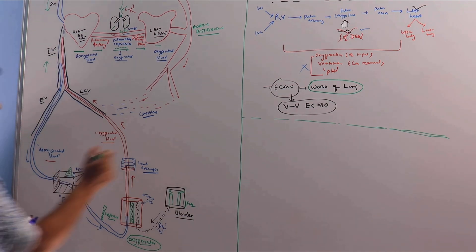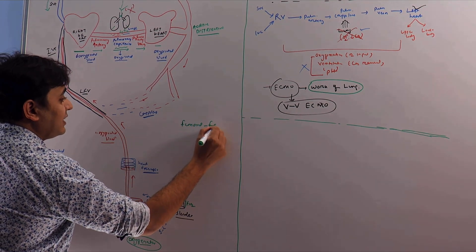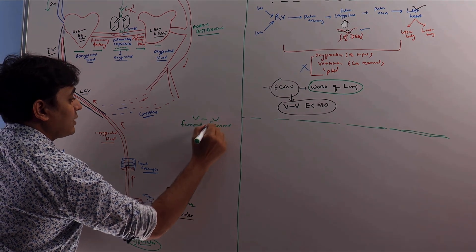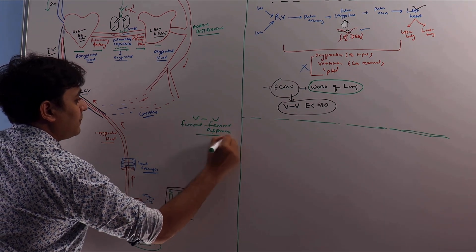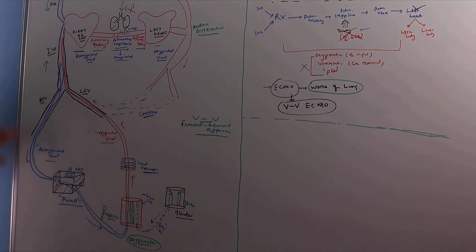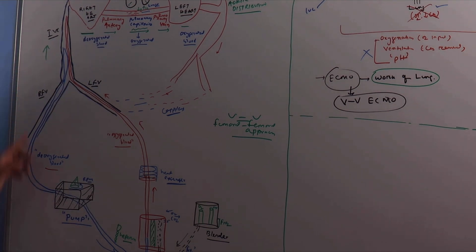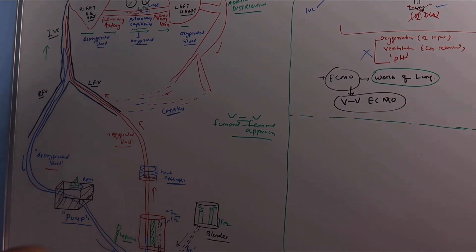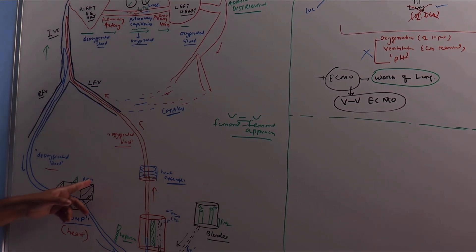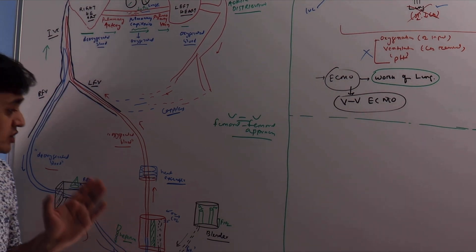Usually when you do a femoro-femoral approach — femoral is one vein, another femoral is another vein — this is a VV-ECMO femoro-femoral approach. We take the deoxygenated blood from the right femoral vein and use a pump to take the blood out. We have to create a negative pressure so the blood can be sucked out. In the ECMO machine the pump works as the heart — it has a motor running at a set RPM that creates the negative pressure.